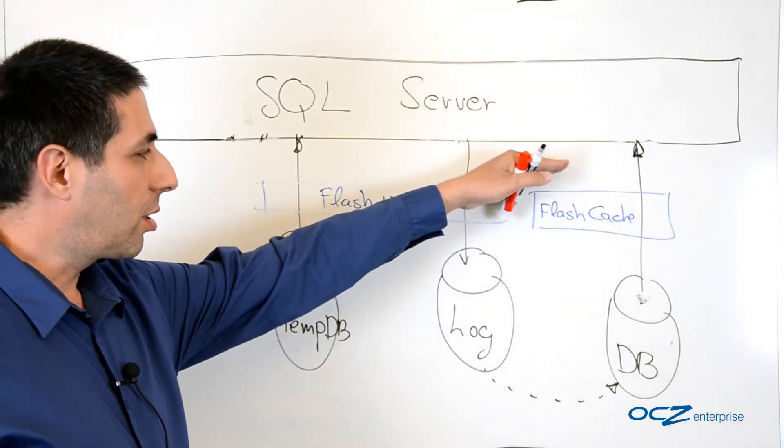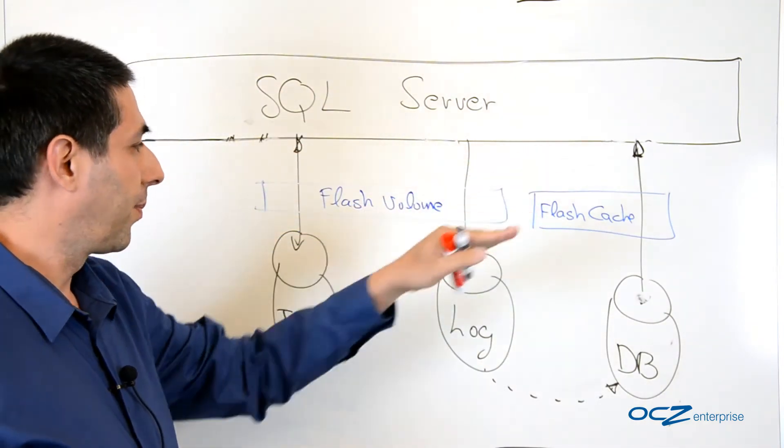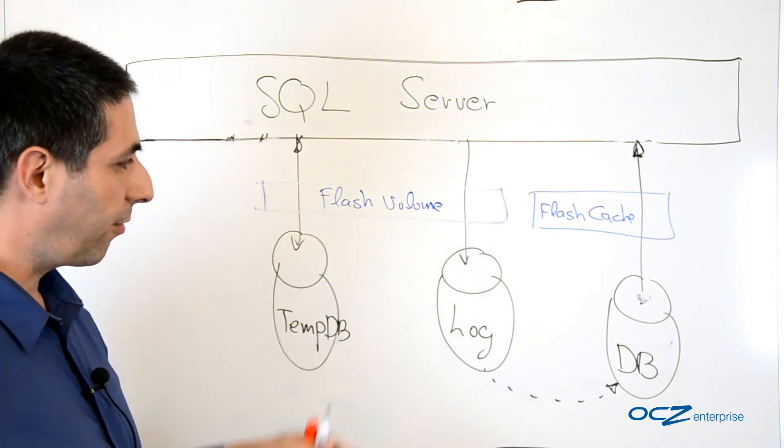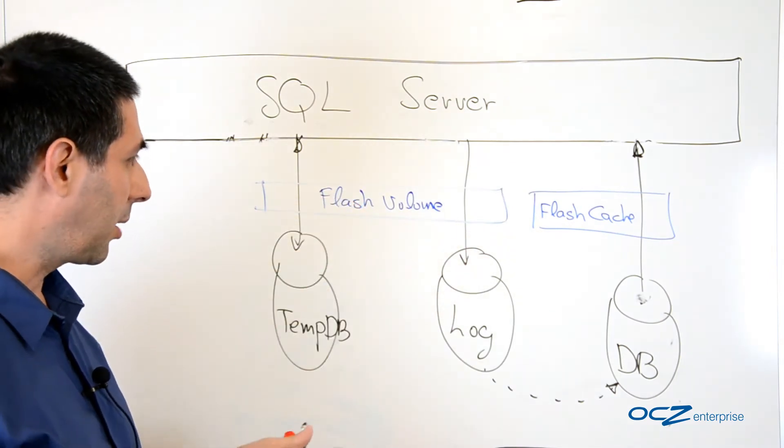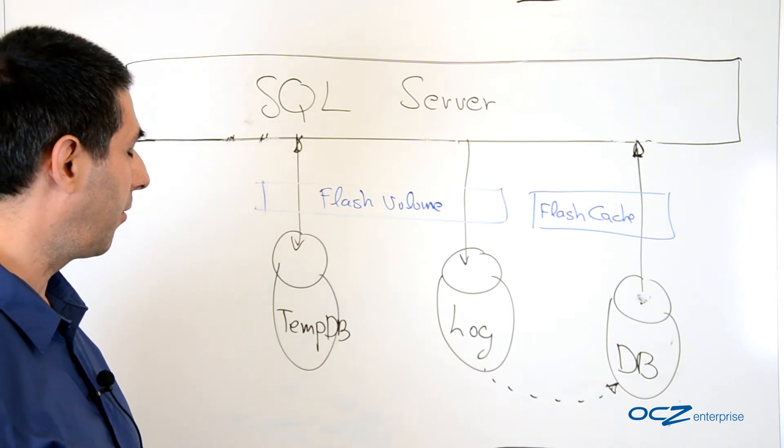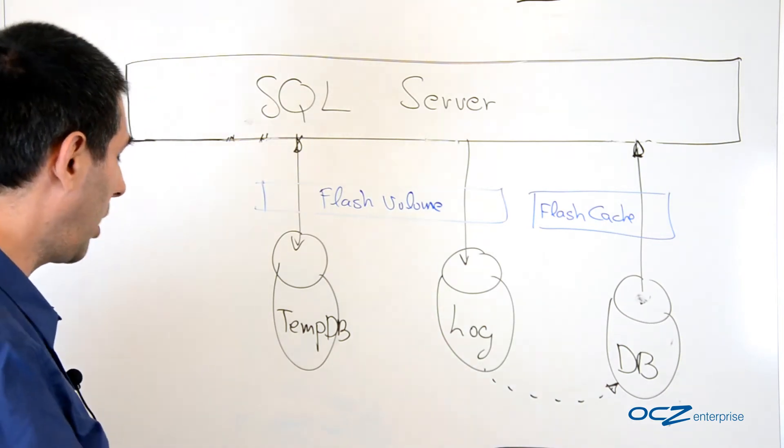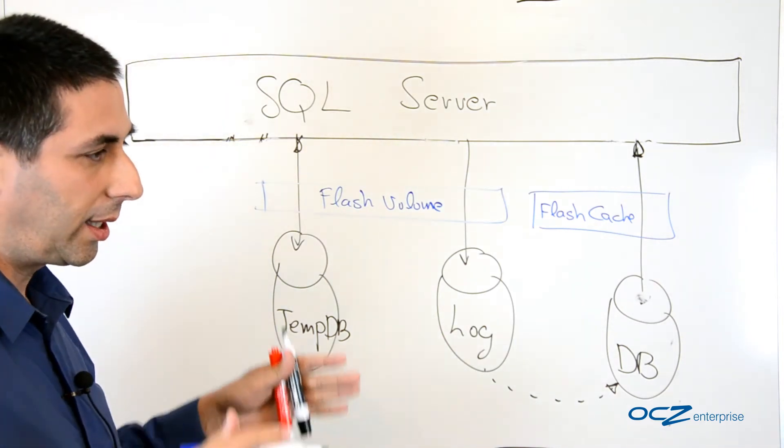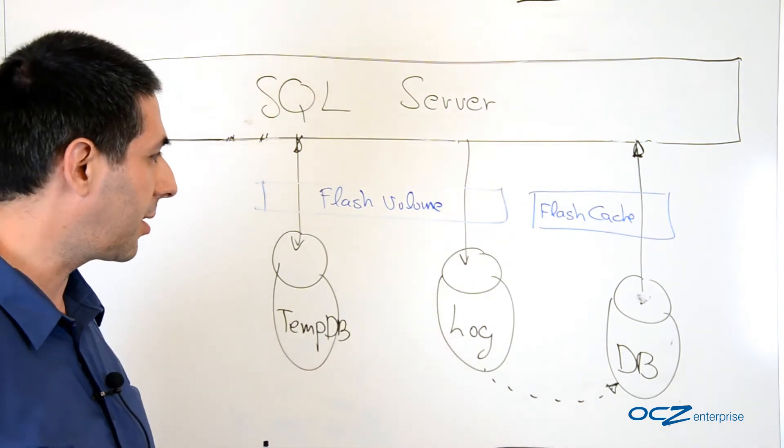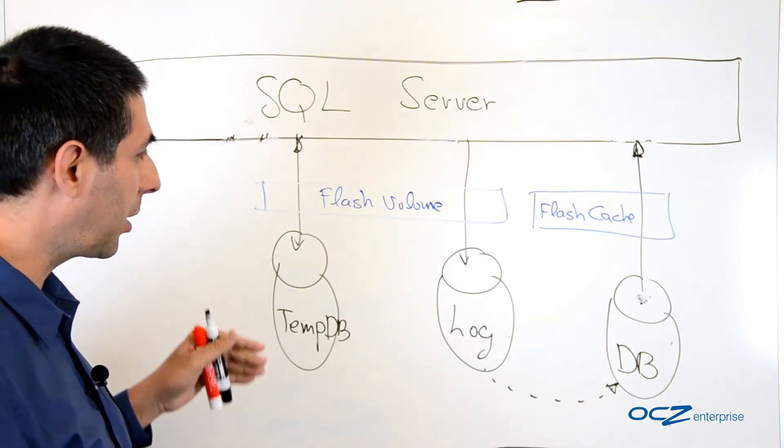We are doing the flash cache using the ZDXL software. The flash volume is just a partition on the flash itself. Using the ZDXL, we have a unique capability of taking the entire SSD, the ZDrive SSD, and making two partitions.